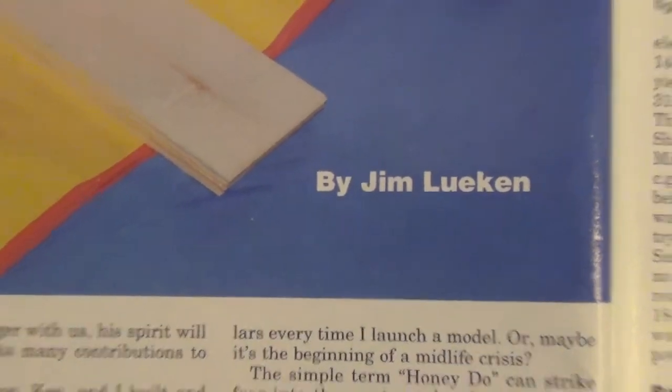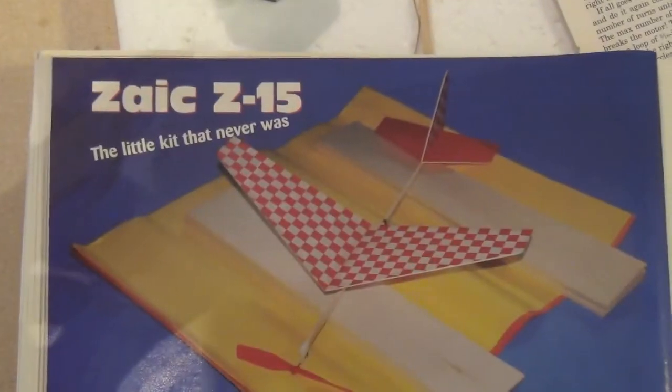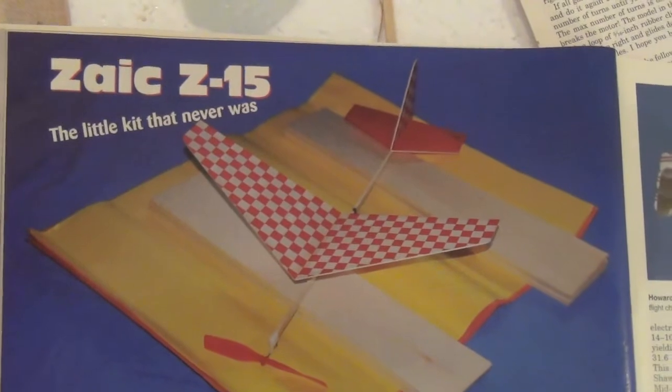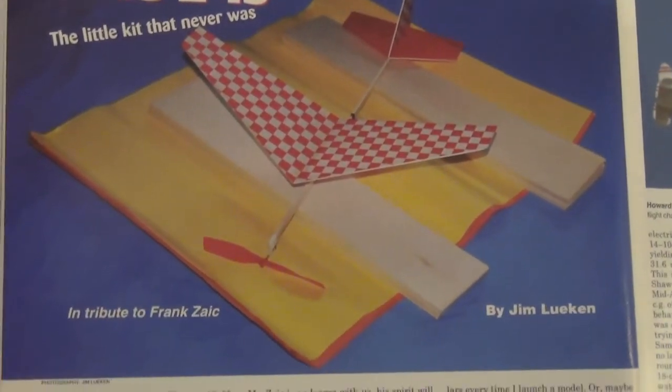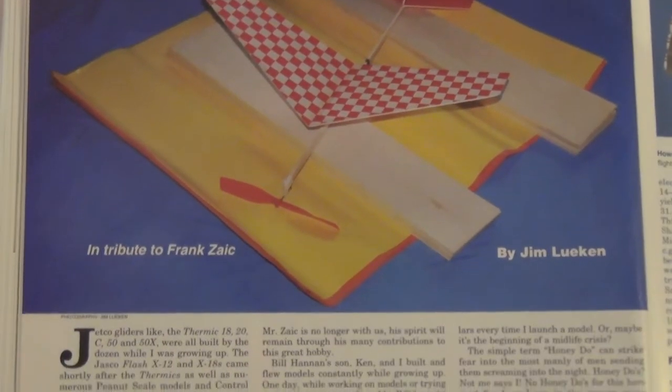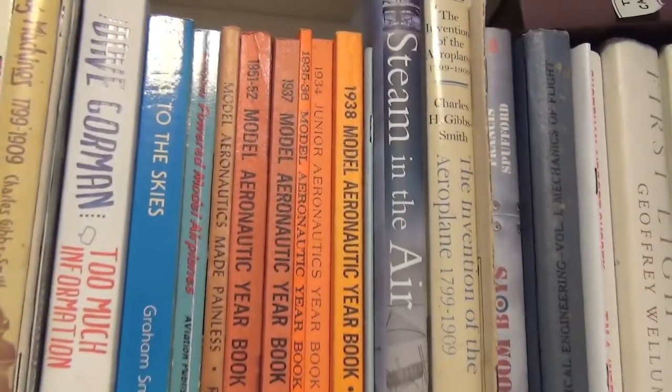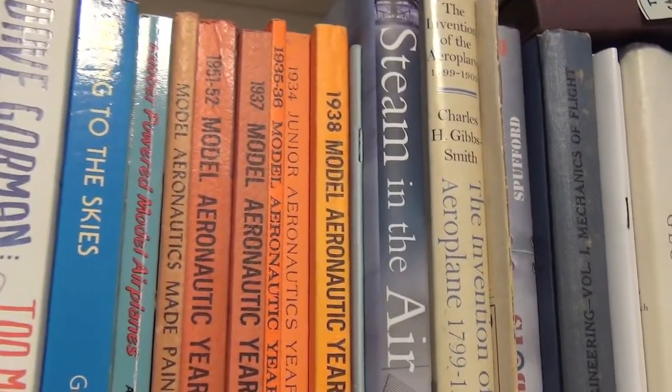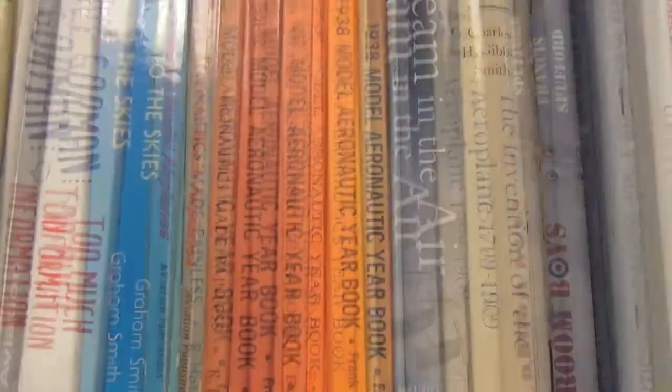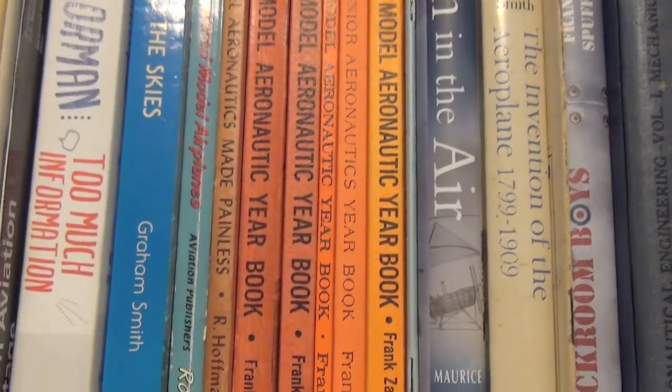Interesting article by Jim Lucan about how Frank Zake got him when he was a boy to make the prototype. Frank Zake was responsible for writing and publishing the Model Aeronautics yearbooks from the 30s through into the 50s.